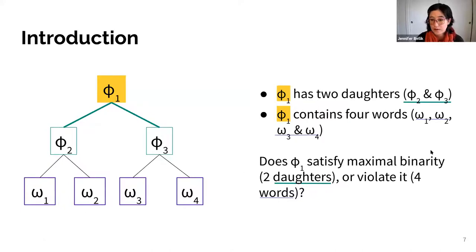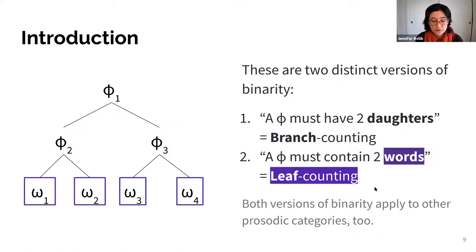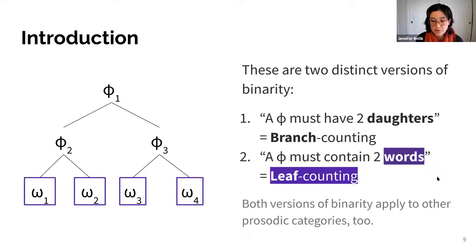You can find papers claiming both in the literature. There are two distinct versions of binarity. The first says a phi has to have two daughters — I'll refer to that as branch counting, where we count the immediate children. The other version says a phi should contain two words — I'll refer to that as leaf counting, going with the tree analogy where leaves are at the edge of the tree. Both versions apply to other prosodic categories too, but I'm focusing on phrasal binarity for concreteness.